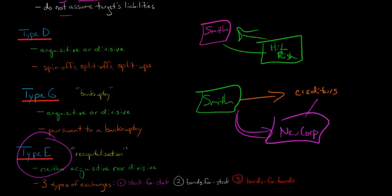Type E reorganization is actually called commonly a recapitalization, because what you're really doing, you're not acquiring a corporation or something like that. It's neither acquisitive nor divisive. What you're doing is maybe you have a lot of outstanding bonds, and you say, you know what, I don't really want to be capitalized a lot with debt. We've got a lot of debt here at the corporation as it is. So what we're going to do, the bondholders have agreed that we're going to give them some preferred stock, or we're going to give them some voting stock or something like that in exchange for these bonds.